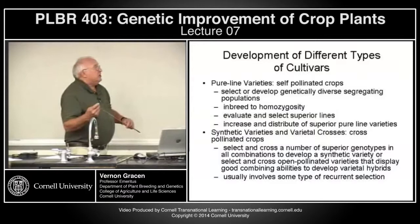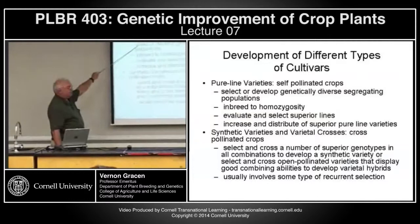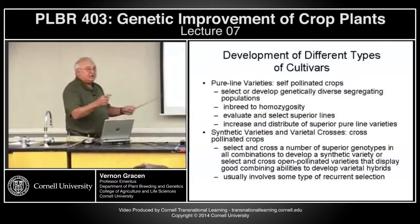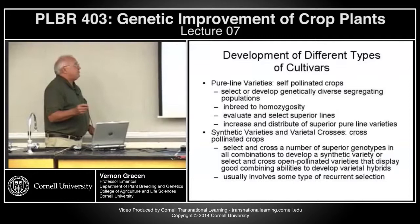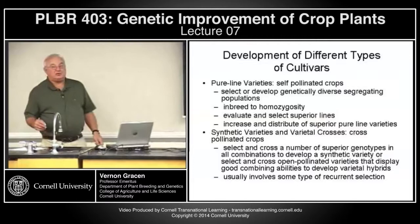For pure-line varieties, always used with self-pollinated crops, you first must select from or develop a genetically diverse segregating population. Step one: you must have genetically controlled variation. Step two: you inbreed to get homozygous pure-line plants. You then evaluate and select the superior inbred lines, and finally increase and distribute pure-line varieties.